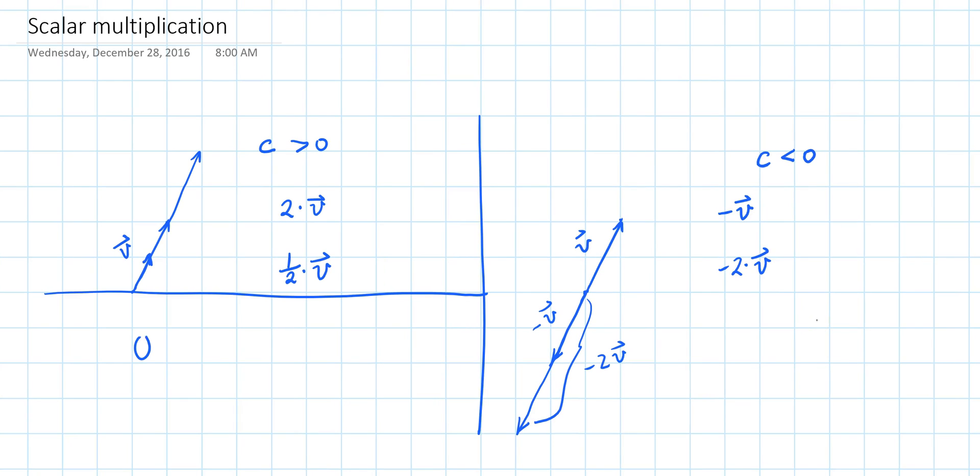Finally, multiplying a vector by the scalar 0 results in the zero vector. The zero vector is a special vector—it has length 0 and can be of any direction.